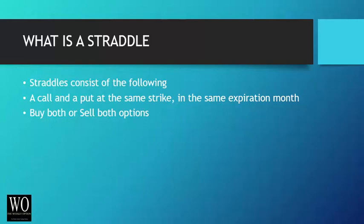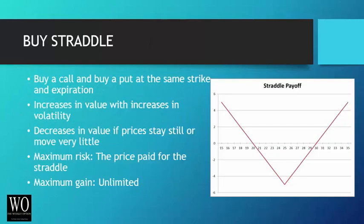What is a straddle? A straddle consists of a call and a put at the same strike in the same expiration month — you buy both options or you sell both options. To buy a straddle, you buy a call and buy a put at the same strike and expiration. The straddle increases in value as volatility increases and decreases in value if prices stay the same or move very little. As you can see in the payoff graph, you pay for the straddle upfront, but as prices move you can make quite a bit of money in either direction. The maximum risk is the price you paid for the straddle, and the maximum gain is unlimited because the option price can increase as the stock goes higher.